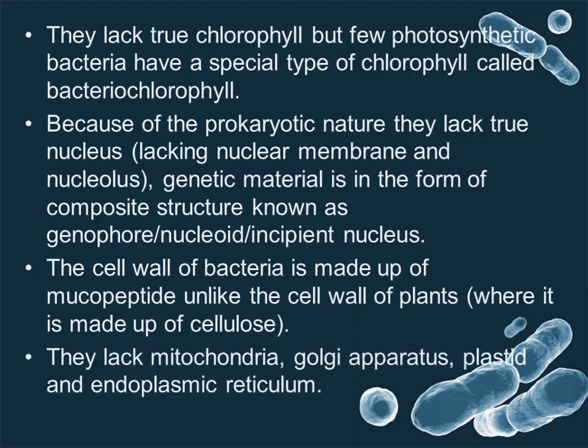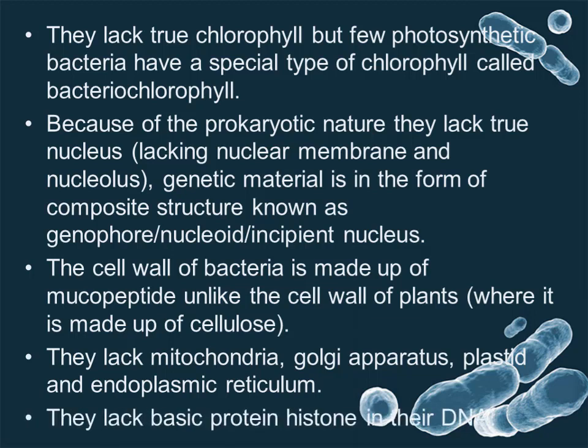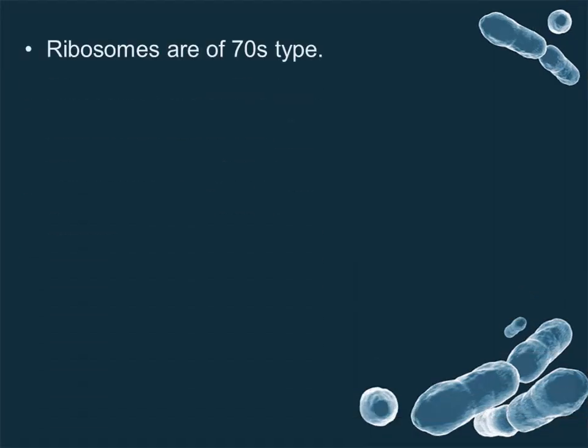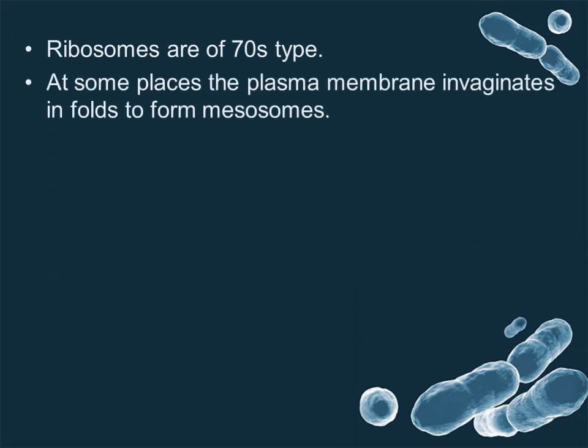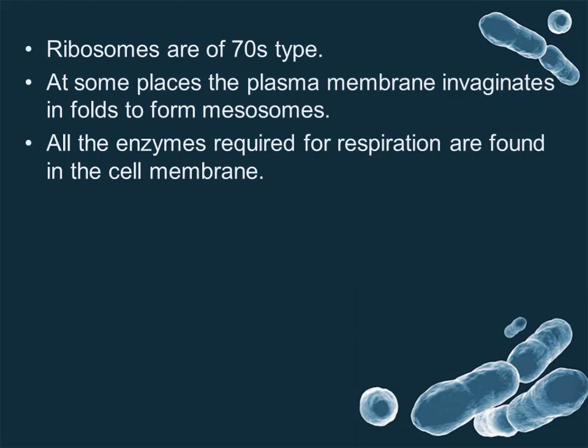Bacteria lack mitochondria, Golgi apparatus, plastids, and endoplasmic reticulum. They also lack basic histone proteins in their DNA. Ribosomes are of the 70S type. At some places, the plasma membrane invaginates in folds to form mesosomes. All the enzymes required for respiration are found in the cell membrane.